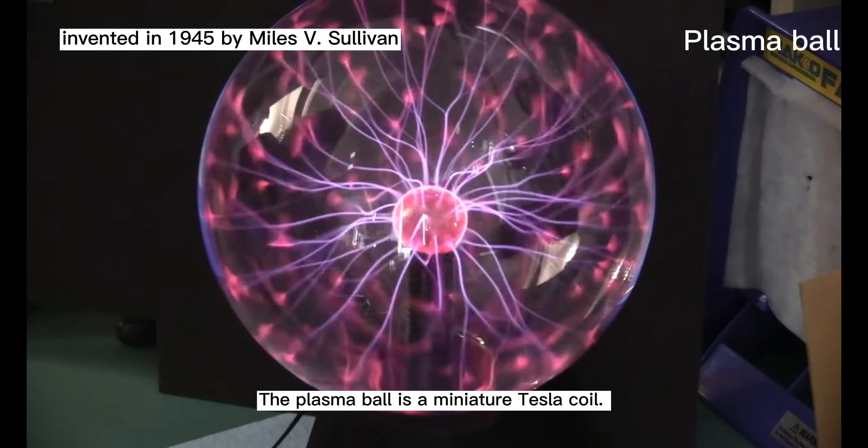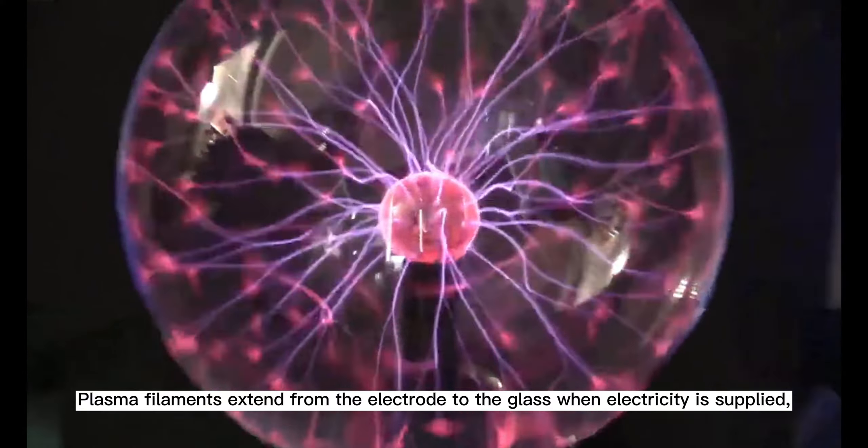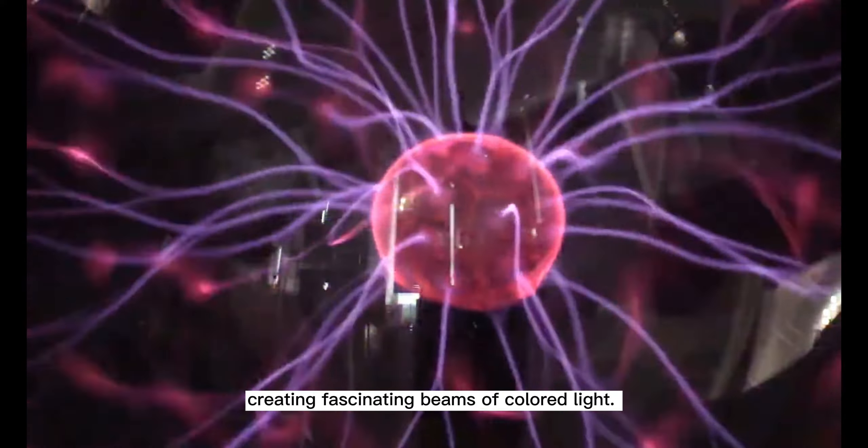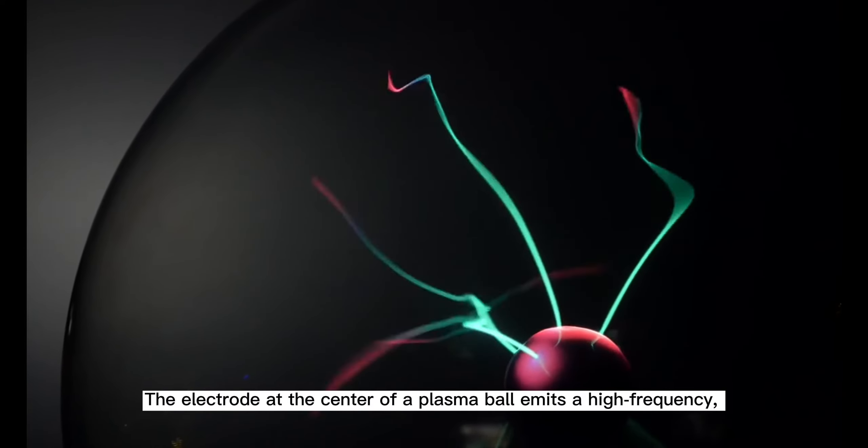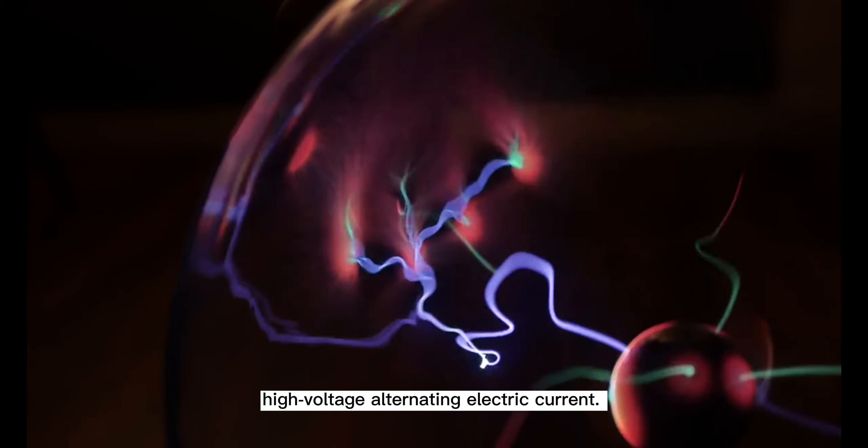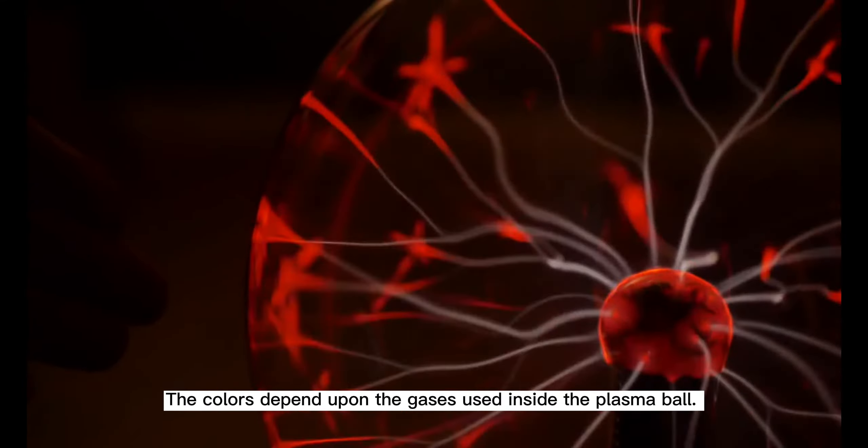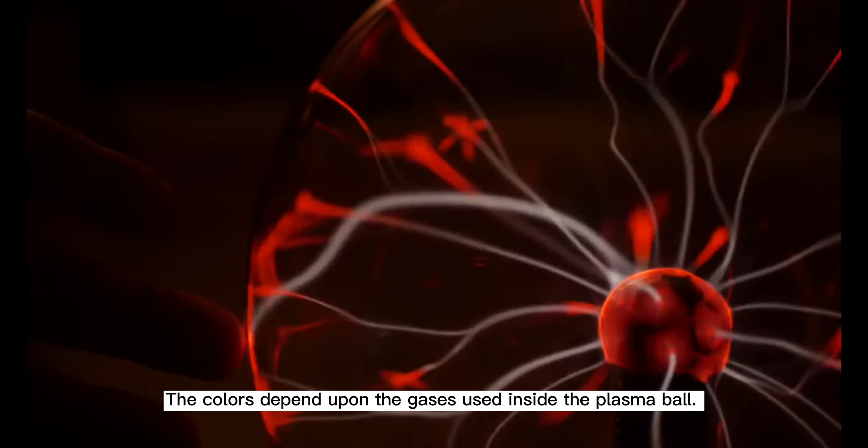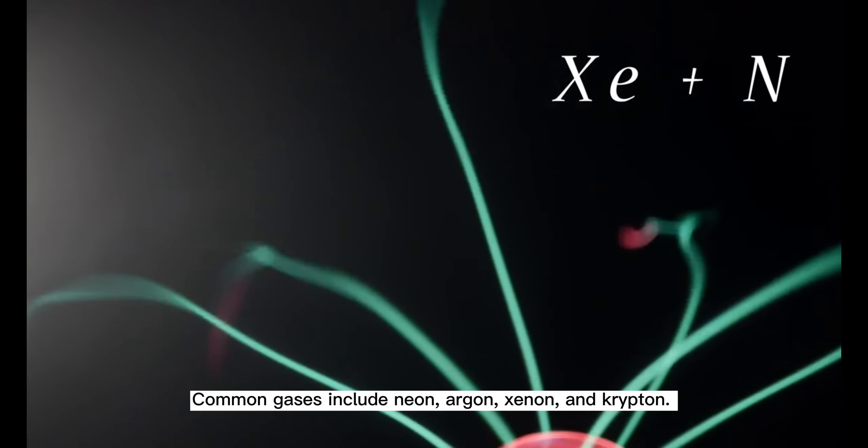The plasma ball is a miniature Tesla coil. It is a clear glass ball filled with a mixture of noble gases with a high-voltage electrode at its center. Plasma filaments extend from the electrode to the glass when electricity is supplied, creating fascinating beams of colored light. The electrode at the center of the plasma ball emits a high-frequency, high-voltage alternating electric current. This current flows through the plasma filaments to create colorful tangles of light. The color depends upon the gases used inside the plasma ball. Common gases include neon, argon, xenon, and krypton.